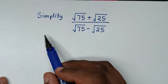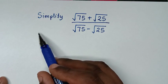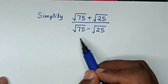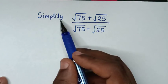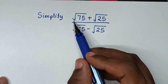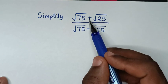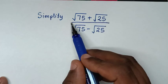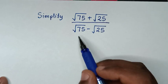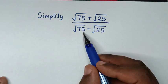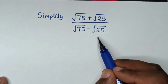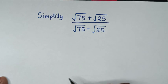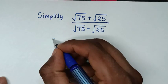Hello, you are welcome to solve this math problem by simplifying square root of 75 plus square root of 25 over square root of 75 minus square root of 25.